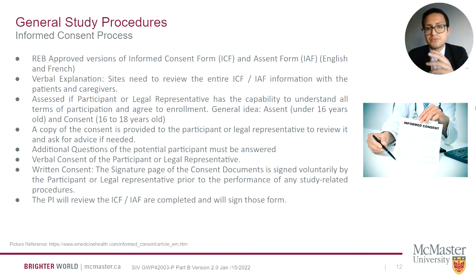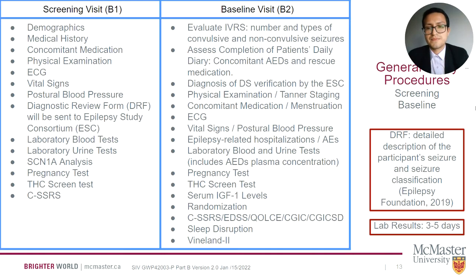It's important to emphasize that informed consent must be obtained prior to any study-related procedures. The screening and baseline visit procedures are listed in this chart; please refer to protocol section 9 for detail. Postural blood pressure will be assessed after 5 minutes in supine position and, if possible, 2 minutes in standing position. The Diagnosis Review Form DRF will be sent to the Epilepsy Study Consortium ESC for confirmation of diagnosis, which could take up to 14 days.